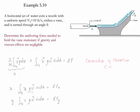When we substitute, we start with only the first velocity component and then simplify based on whether or not the velocity is constant at each one of the control surfaces.